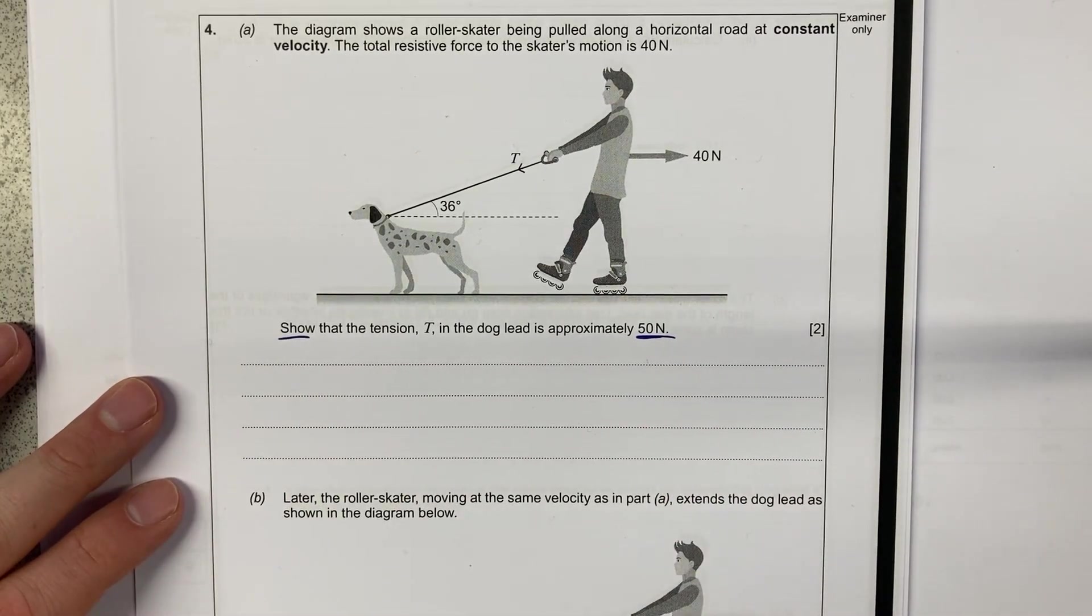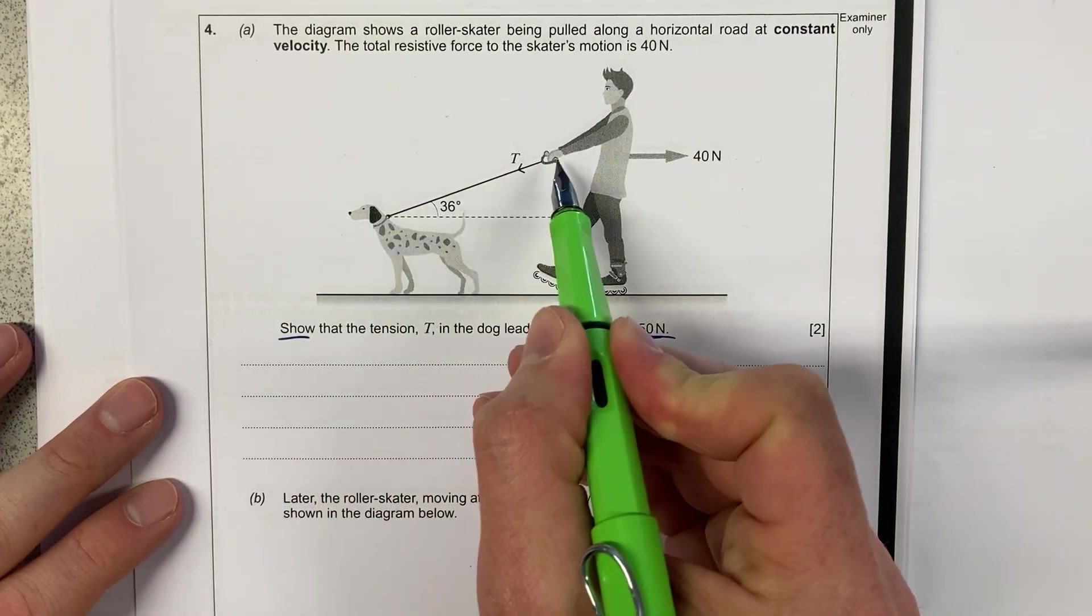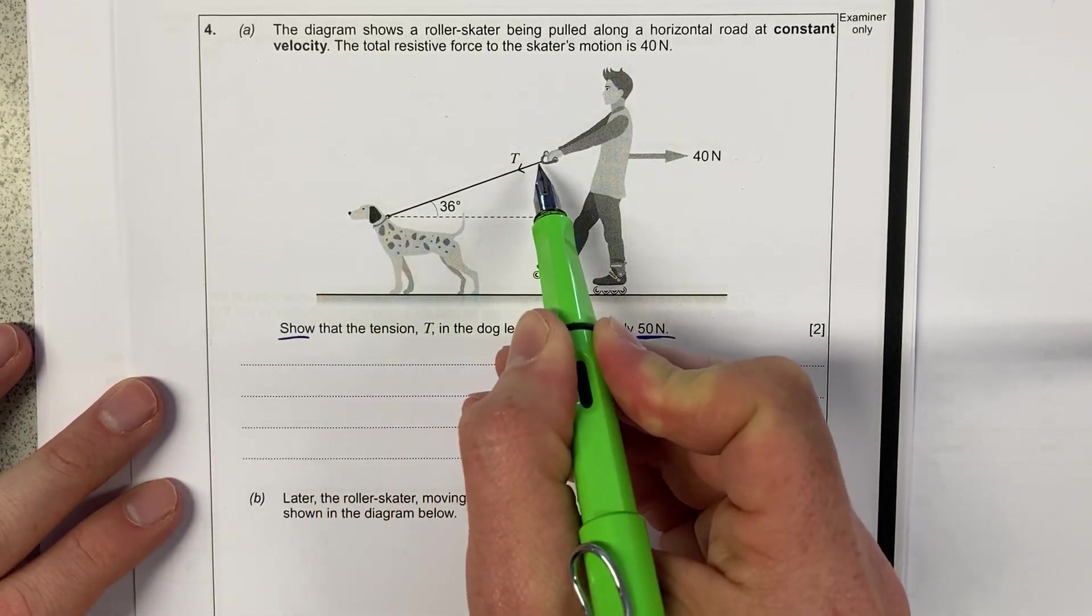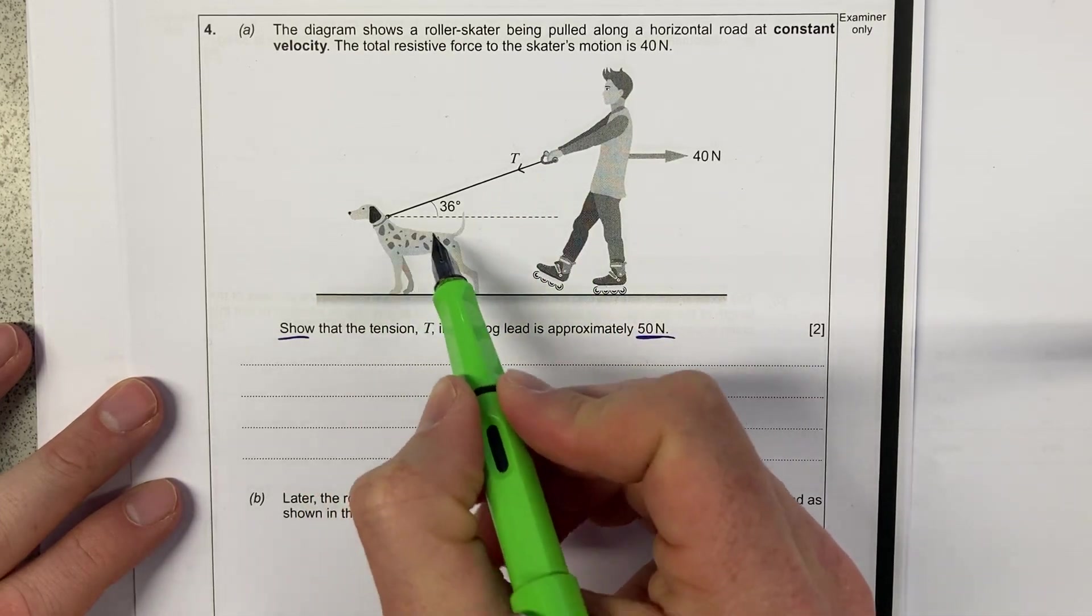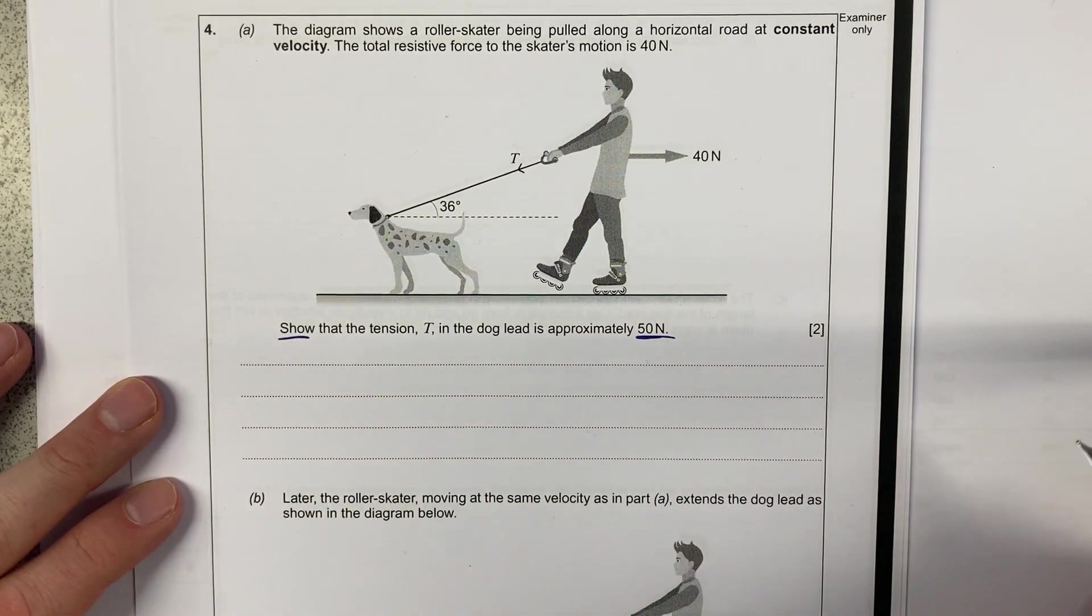Show is an important command word and they want us to show that the tension in this lead that's attached to the dog, hopefully no dogs were harmed in the making of this exam question.